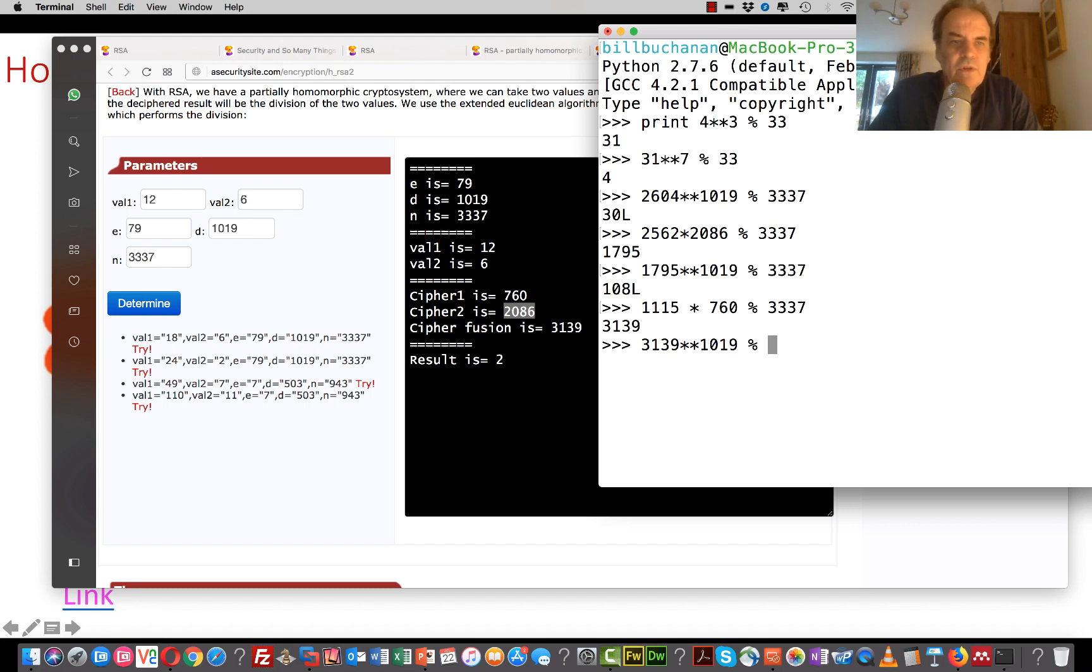And we'll take the mod of 33337. And the answer is 2. So that has shown us that the divide actually works. 12 divided by 6 is 2.